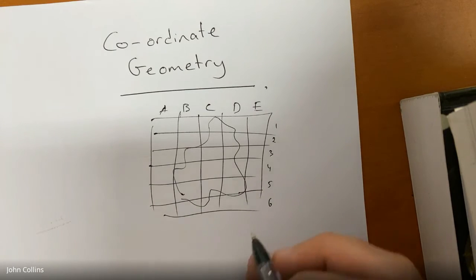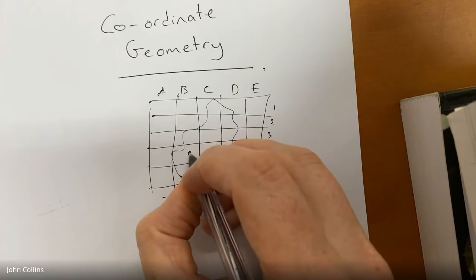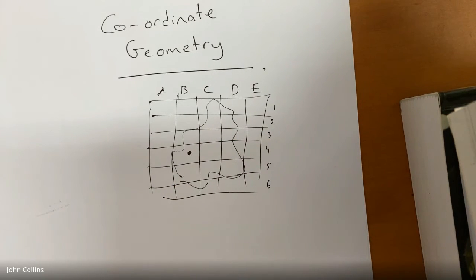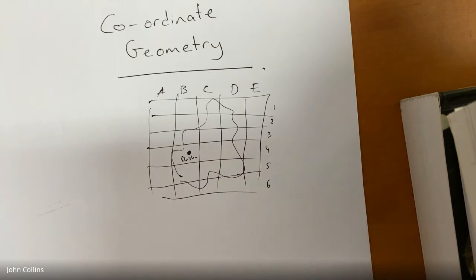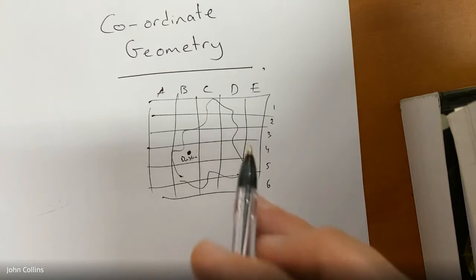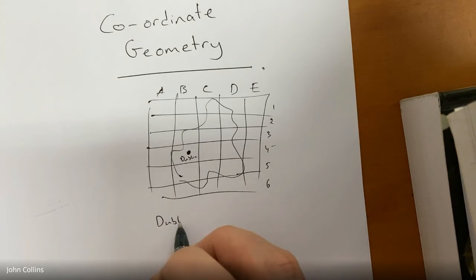And I could say, where is, say there is a town there. So that's Dublin in Ireland. And where is Dublin located on this map? Well, you'd grid reference it. It would be B4, wouldn't it? So Dublin would be, in grid reference, B4.